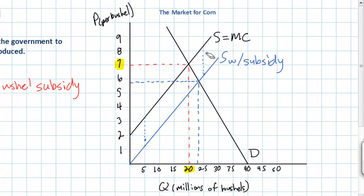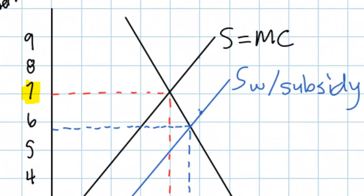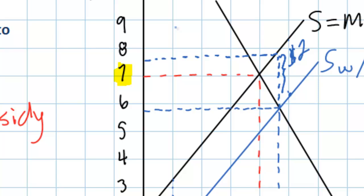Our analysis of the effect of this subsidy is not complete though. Because despite the price of just under $6 that consumers are paying, producers are actually going to receive an additional $2 on top of this. This represents the payment from the government to the producers for each unit produced. Since they're producing around 23 million bushels, producers will now receive an additional $2, which is represented by the vertical distance between the new supply curve and the old supply curve. To show the actual amount of benefit that producers enjoy from this subsidy, we must continue our dotted line up to the old supply curve and draw it over to our price axis.